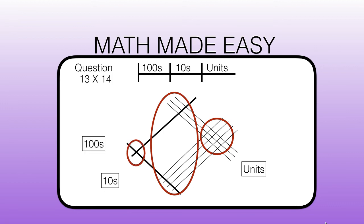We have 1, 2, 3, 4, 5, 6, 7, 8, 9, 10, 11, 12 units — so we write a 2 in the units box and a 1 inside the tens box to remind us we have to add this in.